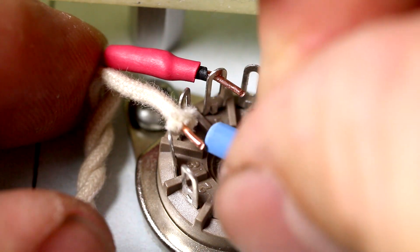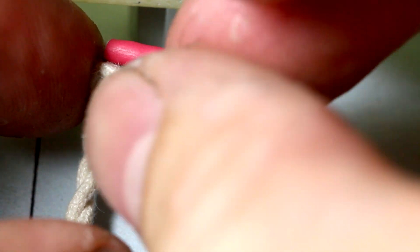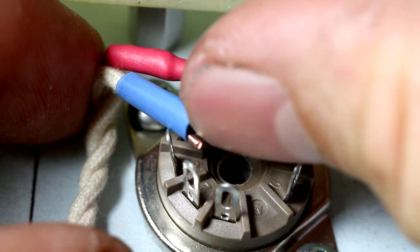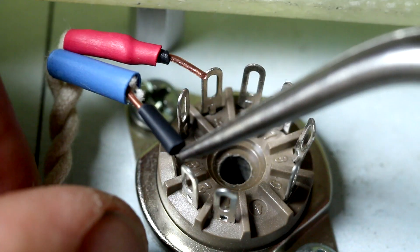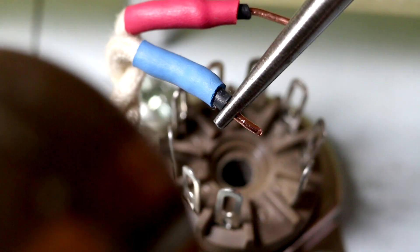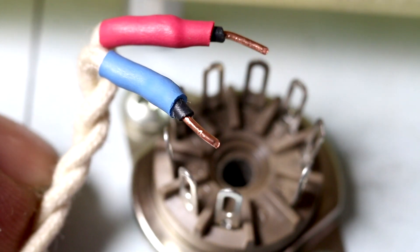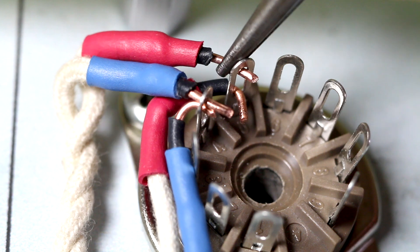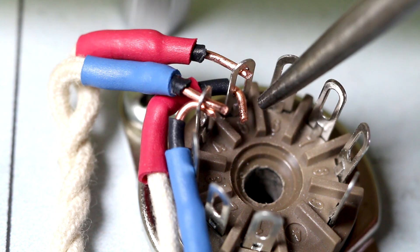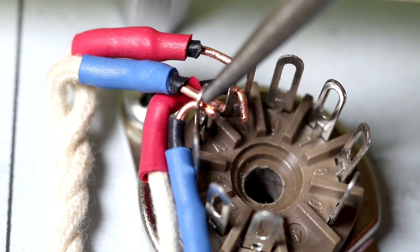What I do here is I put my insulation on first. I've got both red cables in lug five and I've got both blue cables in lug four.